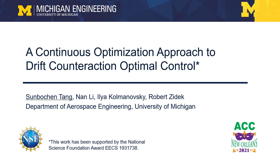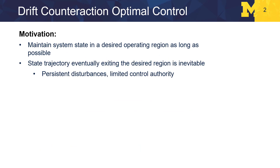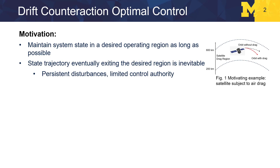Hi, everyone. I'm Sunpo Chen Kang, presenting a novel continuous optimization approach to drift counteraction optimal control (DCOC). This is joint work with Dr. Nan Li, Professor Ilya Kolmanovsky, and Dr. Robert Zidek from the University of Michigan. In many engineering applications, we want to maintain the system state in a desired operating region for safety and efficiency. However, the state eventually drifting out of the desired region can be inevitable due to persistent disturbances, limited control authority, or limited resources. For example, a satellite in low Earth orbit is subject to air drag, and with limited onboard fuel, it's impossible to keep the satellite at the target altitude forever.